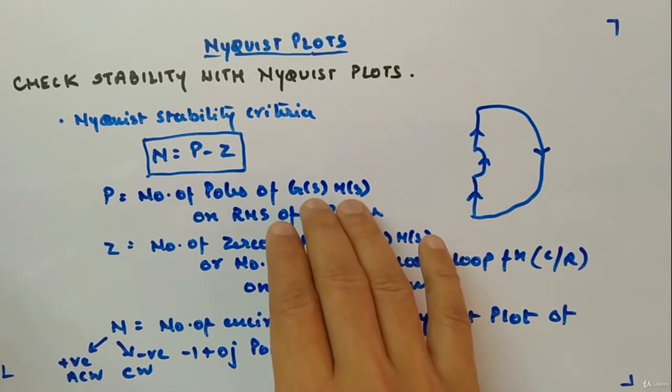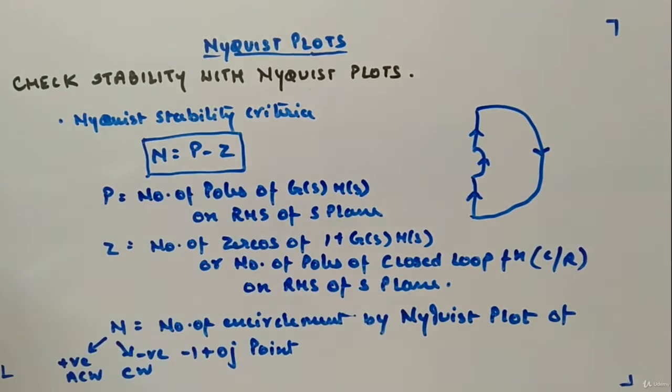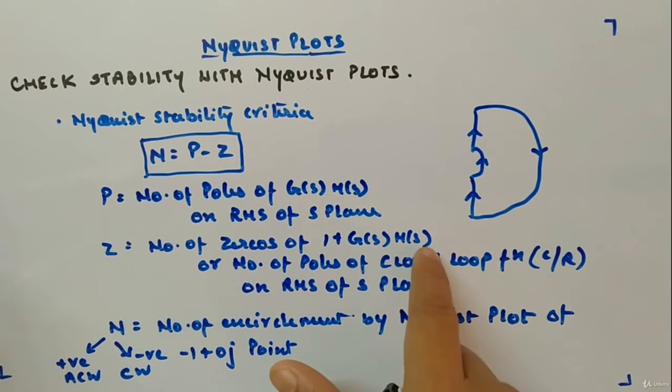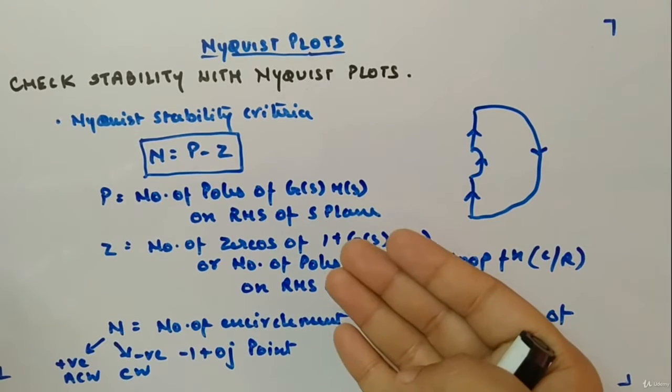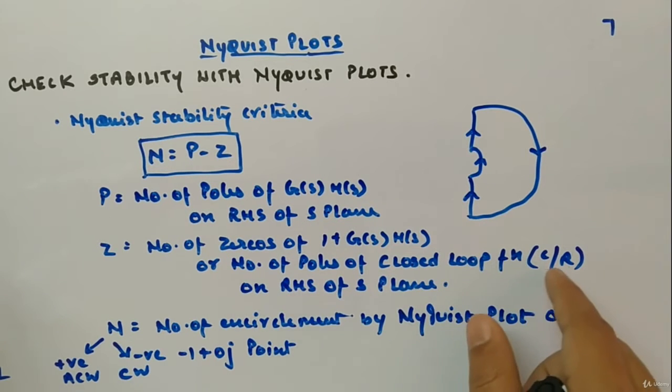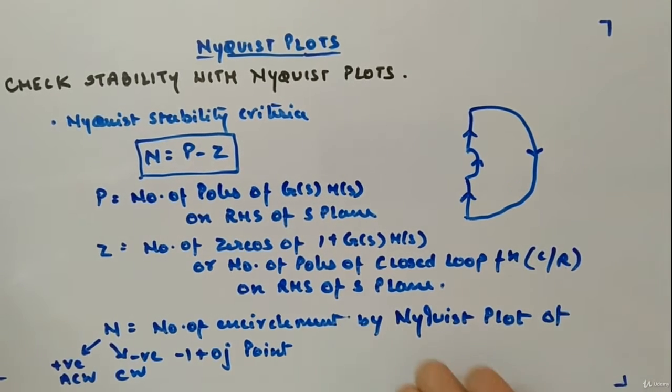Z we will calculate by this formula. That is number of zeros of 1 plus G(s)H(s), or to be more precise, these are the poles of closed loop transfer function which will tell how many of them are in right hand side of s-plane.